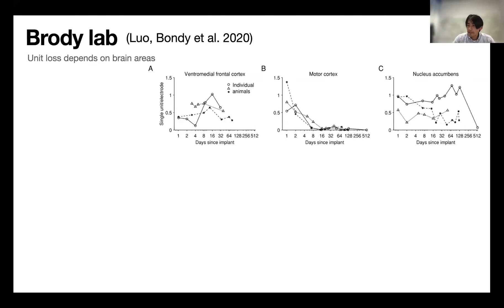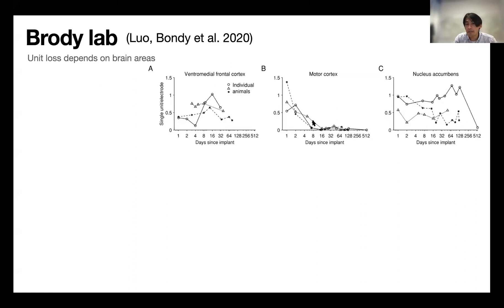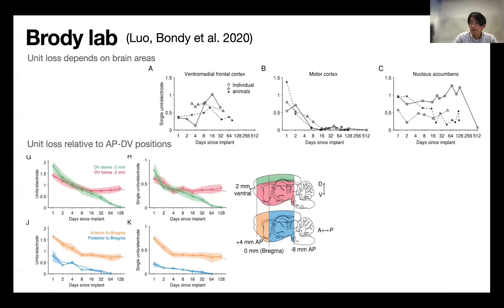Another advantage is that the system has been extensively benchmarked. Thomas and Adrian recorded from at least 17 different brain areas for more than a month. They found that unit loss appears to depend on the brain area recorded. For example, some areas such as motor cortex may suffer significantly more unit loss compared to others. As a general trend, unit loss is worse in more posterior regions compared to anterior regions, and in dorsal regions over ventral regions.